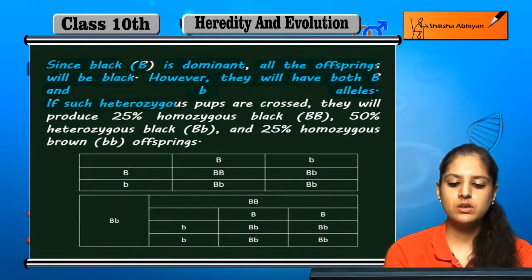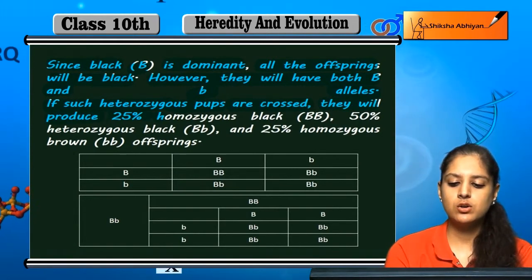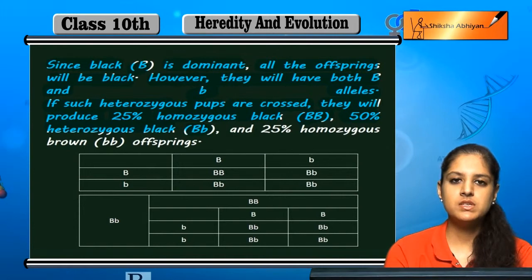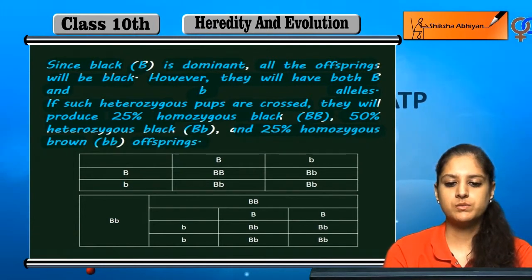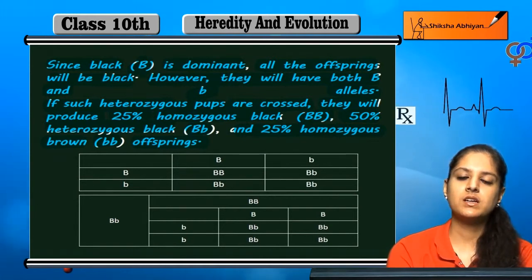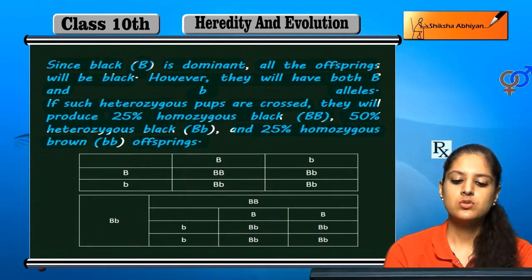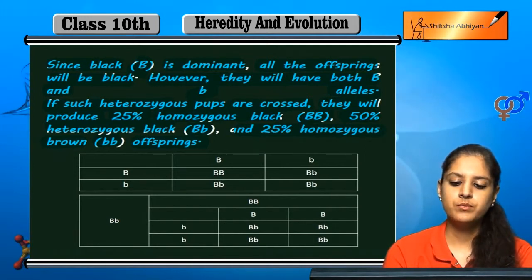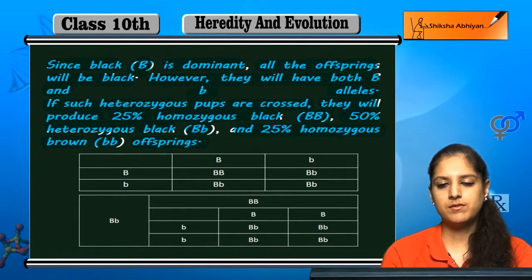If such heterozygous pups are crossed, they will produce 25% homozygous black (BB), 50% heterozygous black (Bb), and 25% homozygous brown (bb) offspring. The dominant character B (black) is expressed, but alleles will be both black and brown.